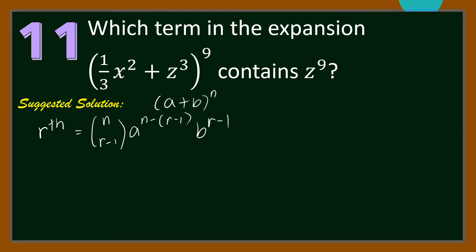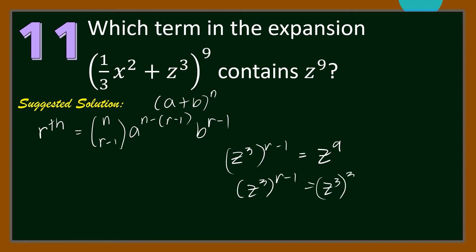In the given binomial expansion, the second term is z³ and we're looking for the term that contains z raised to 9. Therefore, the second term z³ raised to (r−1) must equal z⁹. But z⁹ is z³ raised to the 3rd power. Hence, z³ raised to (r−1) equals z³ raised to the 3rd power. From this equation, r−1 = 3, so r = 4. Hence, the term that contains z raised to the 9th power is the 4th term.